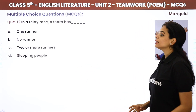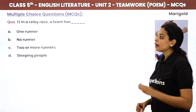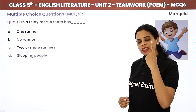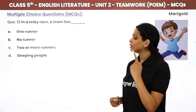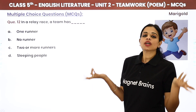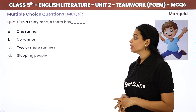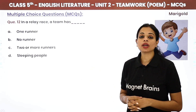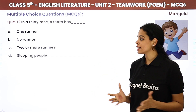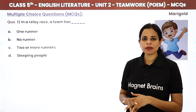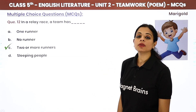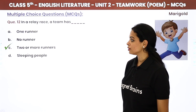In a relay race, a team has — if there's only one person, there's no race. The options suggest two or more runners. Yes, a relay race needs two or more runners. The answer is two or more runners.